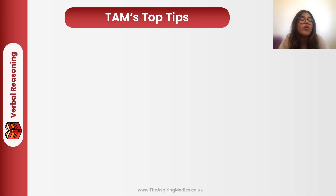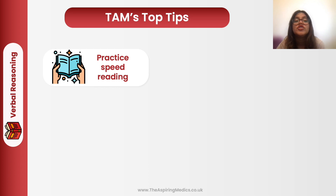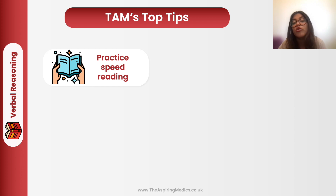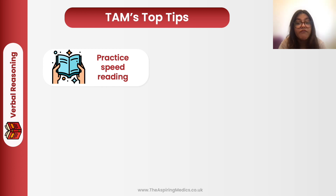Before we end the video, here are some top tips for the verbal reasoning section to help you improve your score and answer questions faster. My first tip is to practice speed reading — this section is very tough on time. You can download the Chrome extension Spreed, which helps you speed read normal articles, blogs, anything you read online. Doing this a month or two before your UCAT exam will vastly improve your reading speed and make you much more efficient in this section.